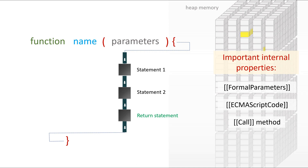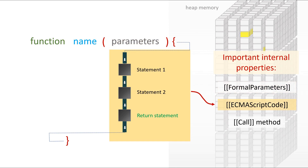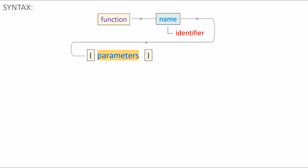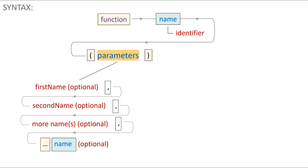If we think about the function with its name, parameters, and body, the parameters part directly relates to the formal parameters internal property, and the body directly relates to the ECMAScript internal property. When using function declarations there is a specific syntax to follow. The syntax is: the function keyword followed by a name which is an identifier, followed by parameters placed in parentheses. We can have no parameters or many parameters; if we have more than one they are separated by commas, and we can end with a rest parameter if we like.